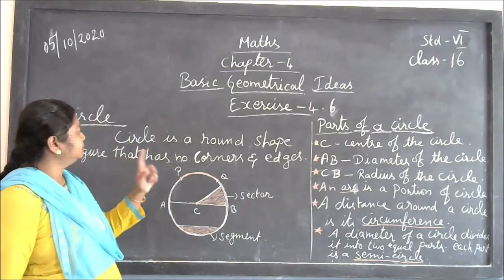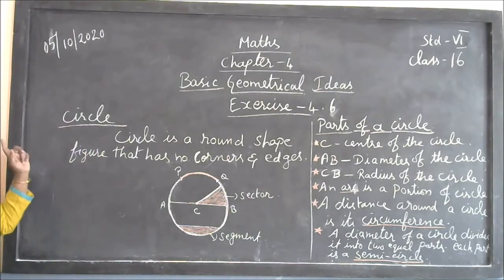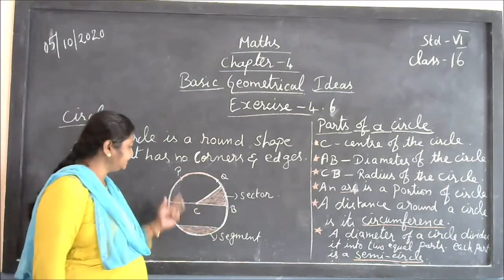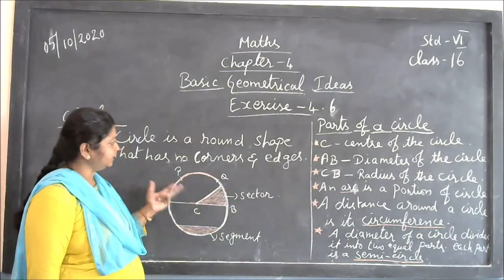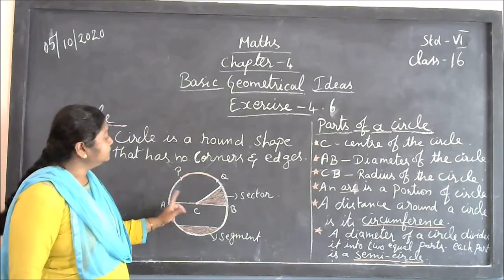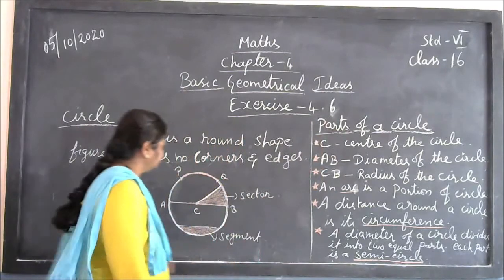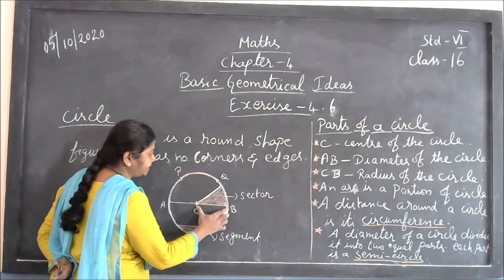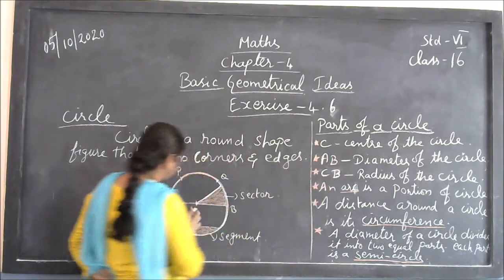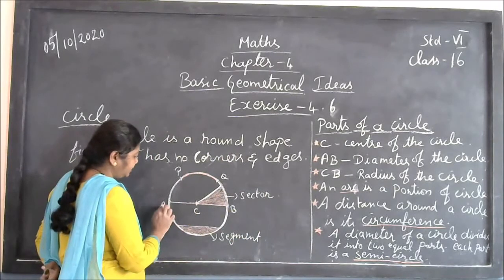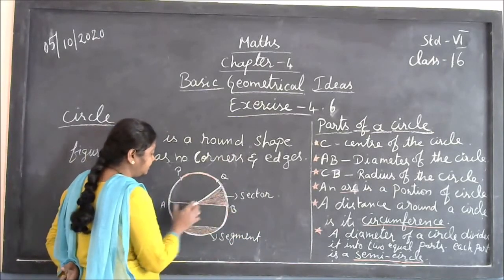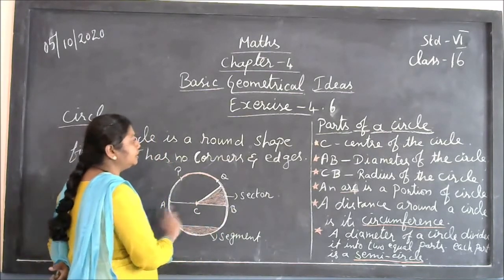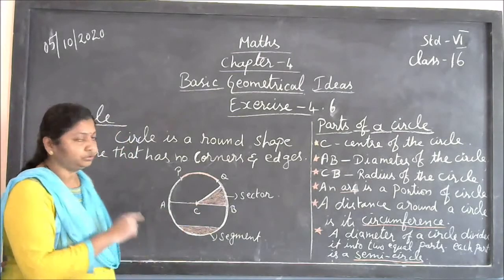Now in exercise 4.6, we are going to learn about the circle. A circle is a round-shaped figure with no corners and no edges. C is the center of the circle. From C to B — this is called the radius. CA and CB are also radii. From A to B, it is called the diameter.